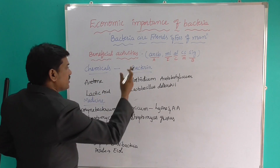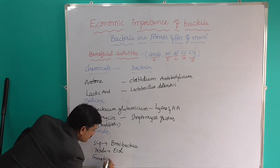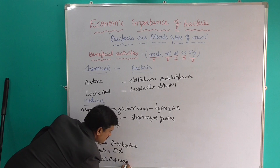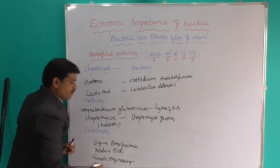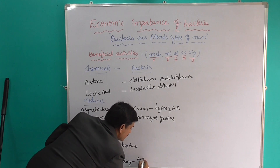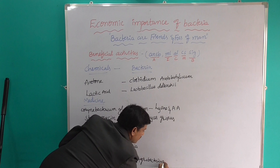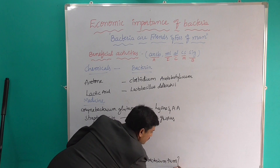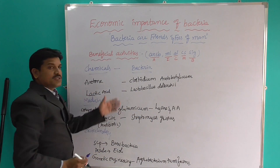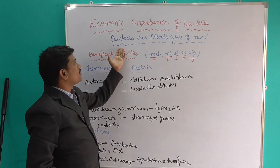For genetic engineering purposes, one bacteria is very very useful. That bacteria name is Agrobacterium tumefaciens. So this shows how much importance bacteria have.